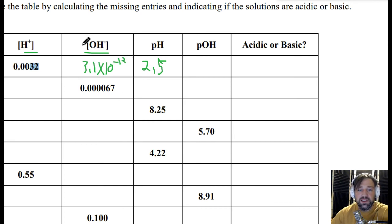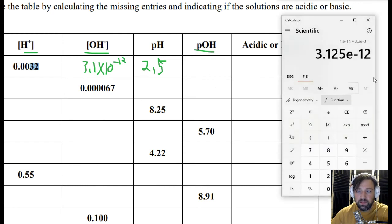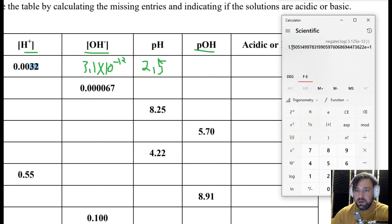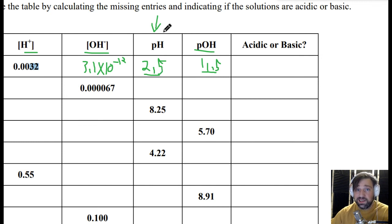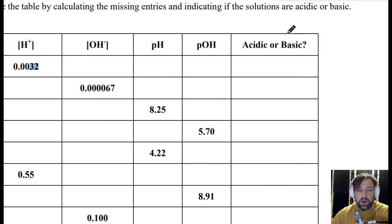So the hydroxide ion concentration is 3.1×10⁻¹². Now I can calculate pOH by taking the negative log of that, which gives 11.5. Another way to get there is just 14 minus pH, which also gives 11.5. Now, is this solution acidic or basic? Looking at the pH of 2.5 — since pH is less than 7, it is acidic.